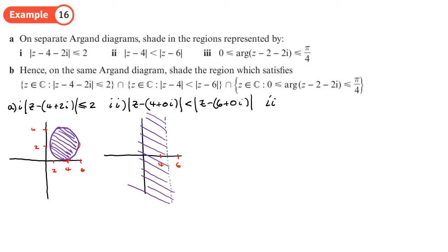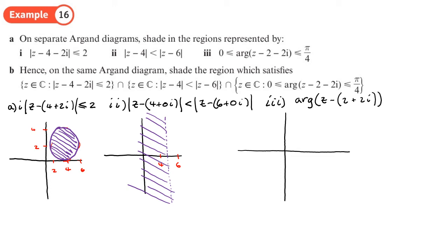The third one is an argument type. In the correct format: arg(z - (2 + 2i)) ≤ π/4. Since it's less-than-or-equal-to, the boundary is a solid line. The half line starts at (2, 2) going up at an angle of π/4, which is 45 degrees — gradient of 1. Since it's less than π/4, we shade below the half line: all the arguments less than π/4. That completes part A.